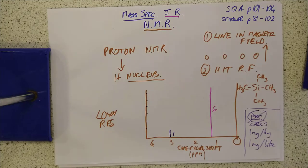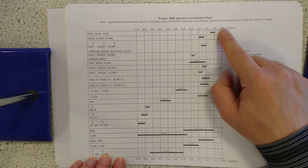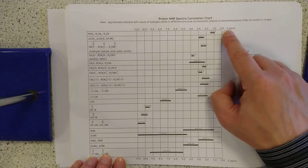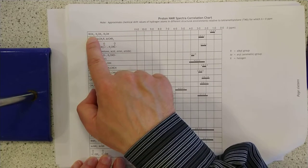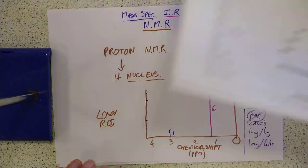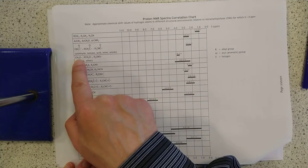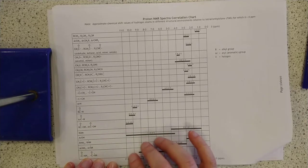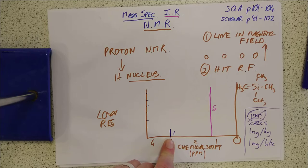Data book time. This is your proton NMR chart. There's your zero point and everything displaced to the left, given by the delta symbol in PPM. RCH₃ or R₂CH₂ — basic hydrocarbon hydrogens — should be between 0.9 and 1.5 PPM. For ROH — the OH hydrogen in alcohols — it's anywhere between 1 and 5 PPM. The data book chemical shift ranges let you confirm what type of hydrogen you're looking at.